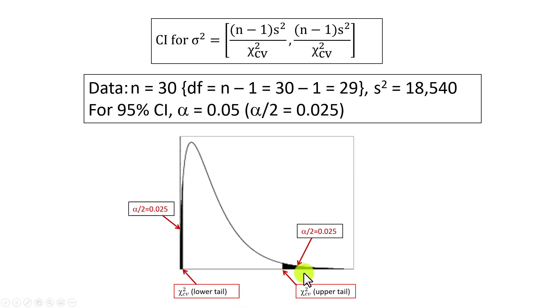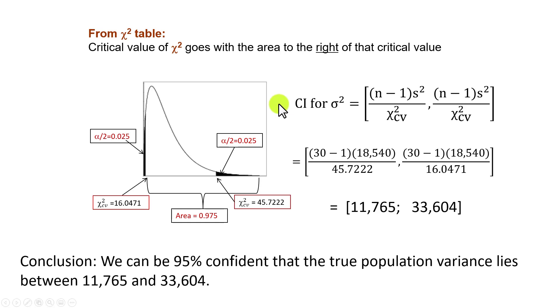Our task here is to identify the critical value associated with this lower tail and also the one associated with this upper tail, plug them into this construct, and figure out the confidence interval limits. The lower tail will be associated with a critical value of 16.047.